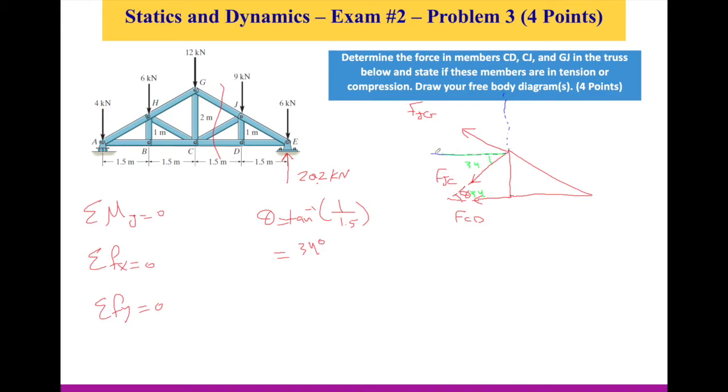So if I want to resolve FJC, what I will have is this first force. This is going to be FJC cosine 34. And going down here, I'm going to have FJC sine 34. This way, I've resolved FJC, this force.